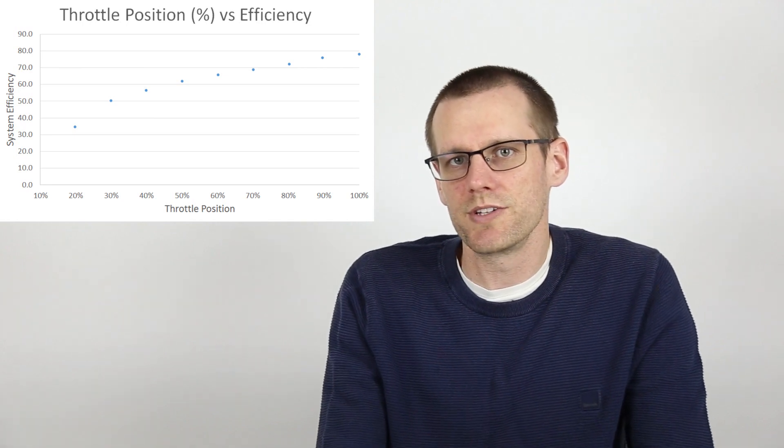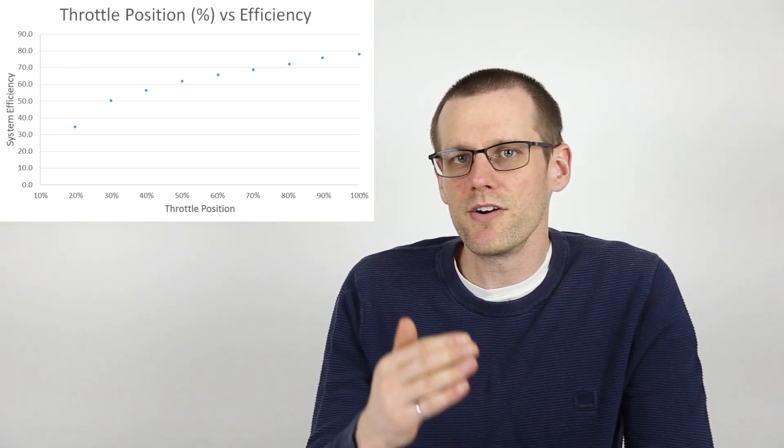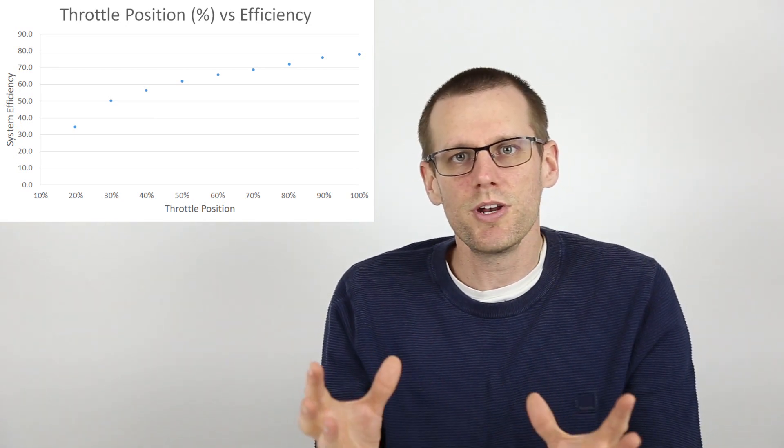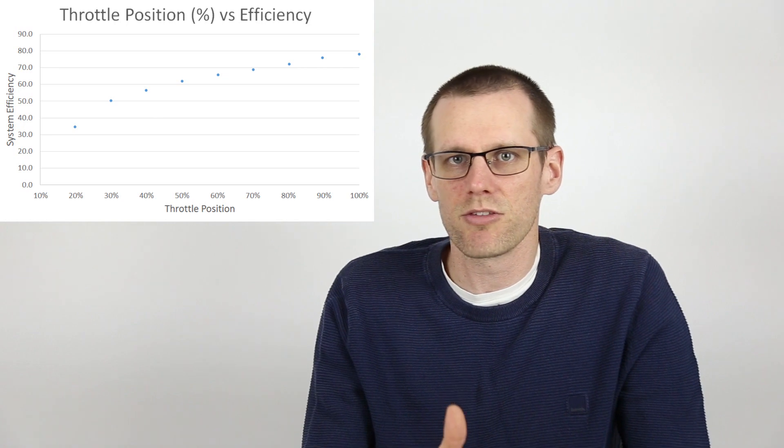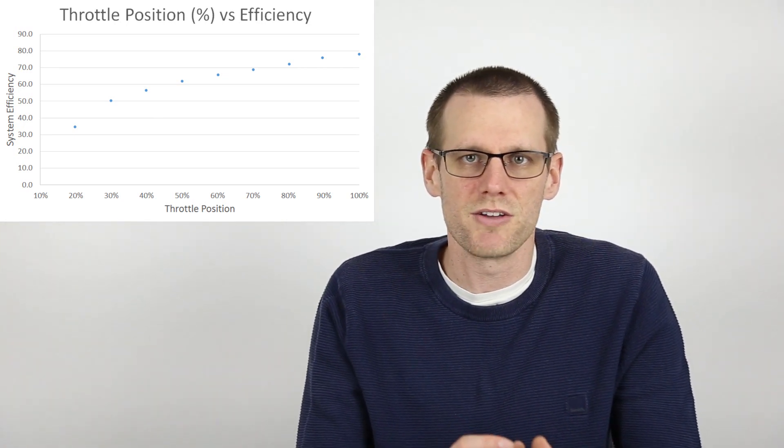The closer you operate your entire power system at 100% throttle, the better off your overall efficiency is going to be. Operating your power system at a lesser throttle percentage is going to contribute to lesser amounts of efficiency.